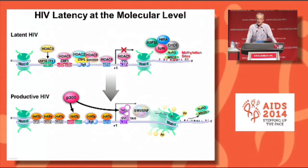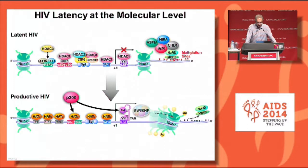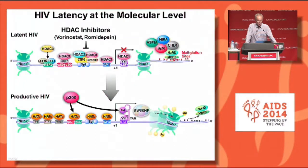P300 has not been discussed very much in the control of latency. It does the opposite reaction from the HDACs — it's an acetyltransferase. It leads to the acetylation of a number of factors in the HIV promoter, including histones, and in combination with TAT leads to the transcriptional reactivation of the HIV promoter. This is essentially the state of what we know about HIV transcription and reactivation from latency, and some of this has been the basis for therapies currently used in HIV-infected patients, mainly the HDAC inhibitors.